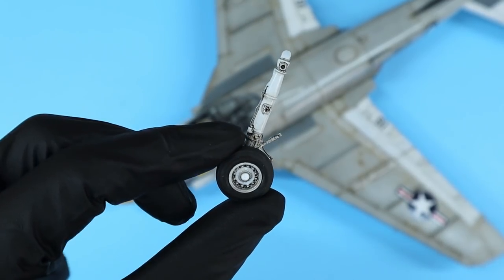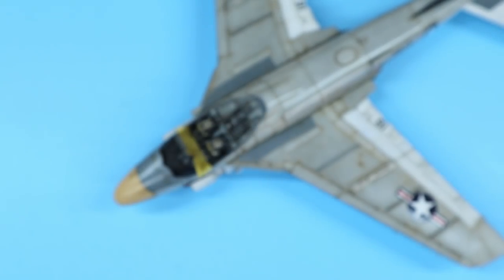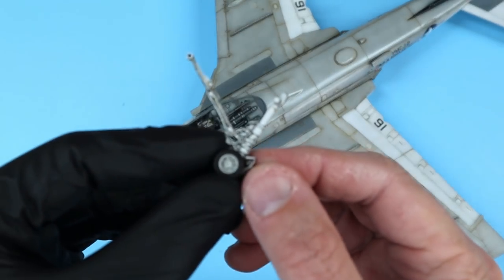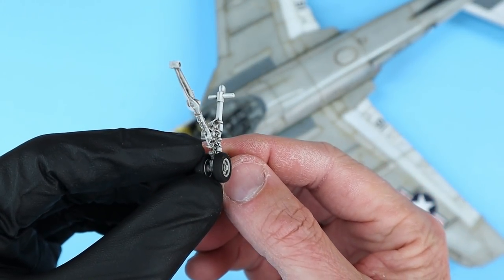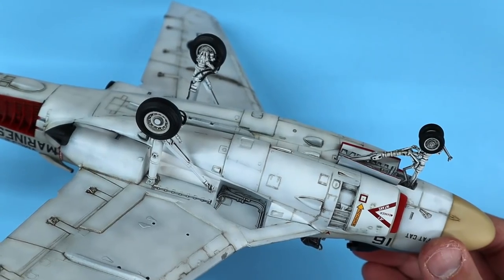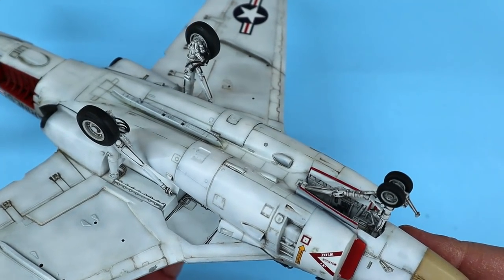While the decals were setting up, I took time to paint, weather, and build up the main and nose gear assemblies. These were installed on the model along with the gear doors and actuators.